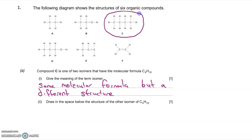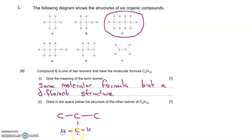Compound C is one of two isomers that have the molecular formula C4H10. For part two you're asked to draw the structure of the other isomer of C4H10. Alkanes undergo chain isomerism. The longest chain in compound C is four carbons long. A chain isomer has a different length of longest chain. So if I cut the longest chain down to three, I then have a CH3 to fit somewhere, and I can't put it on the end because then I'd just draw butane again.